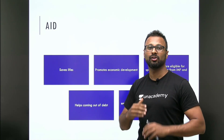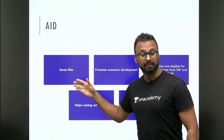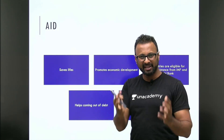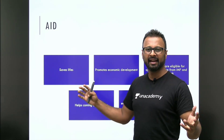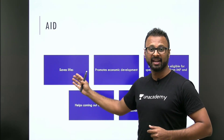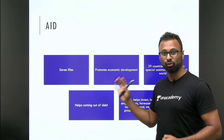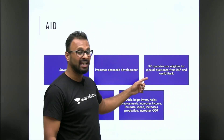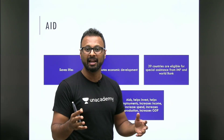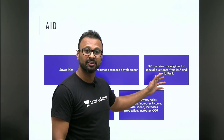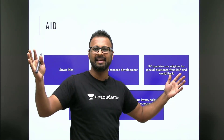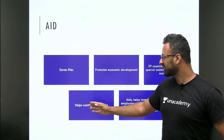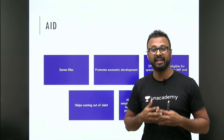There are countries which are underdeveloping and they need financial aid — it saves lives because people do not have food to eat. Aid is very important at those times. During calamities and other situations, the most basic need is saving lives, and for that aid is essential. Aid also promotes economic growth. Did you know that 39 countries are eligible for special assistance from the IMF, and the World Bank gives aid to those 39 countries? When the global community agrees that countries need aid, there is no debate — aid is clearly important.